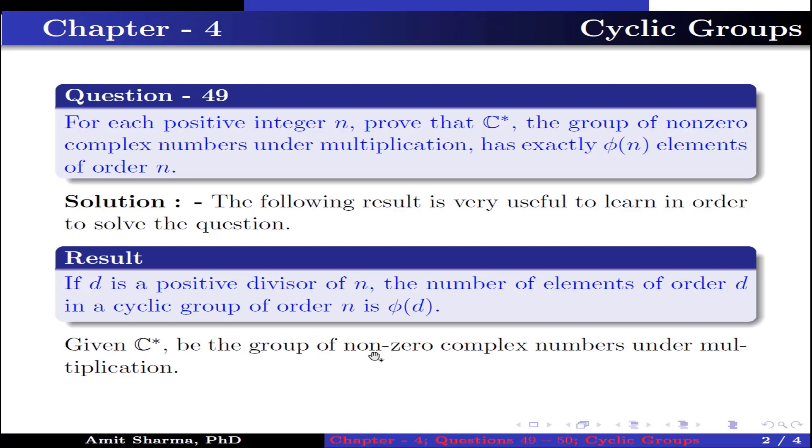Now given, C* is the group of nonzero complex numbers under multiplication. This implies C* is a group generated by cos(360°/n) + i·sin(360°/n). It can be easily verified that the group is a cyclic group of order n.